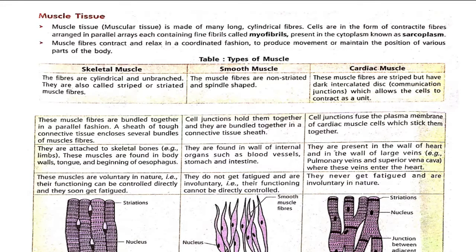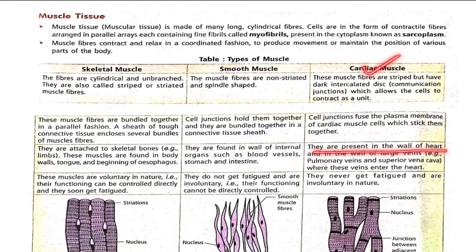Skeletal muscles are found in the body wall, tongue, and beginning of the esophagus. Smooth muscles are found in the walls of internal organs such as blood vessels, stomach, and intestine. Cardiac muscles are present in the wall of the heart and in the wall of large veins, such as pulmonary veins and superior vena cava, where these veins enter the heart.